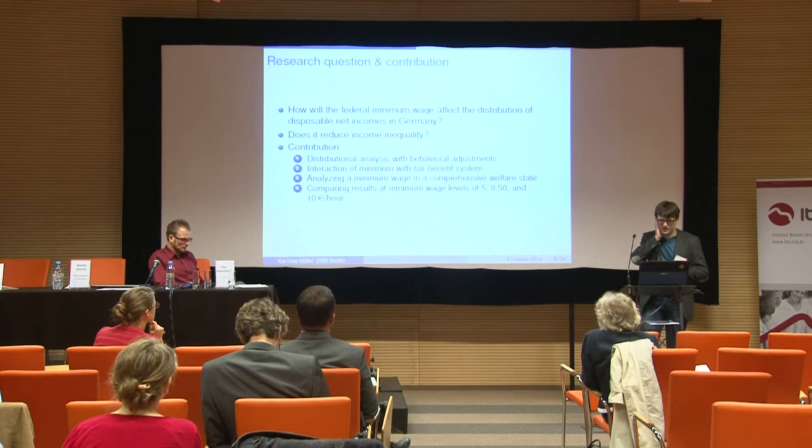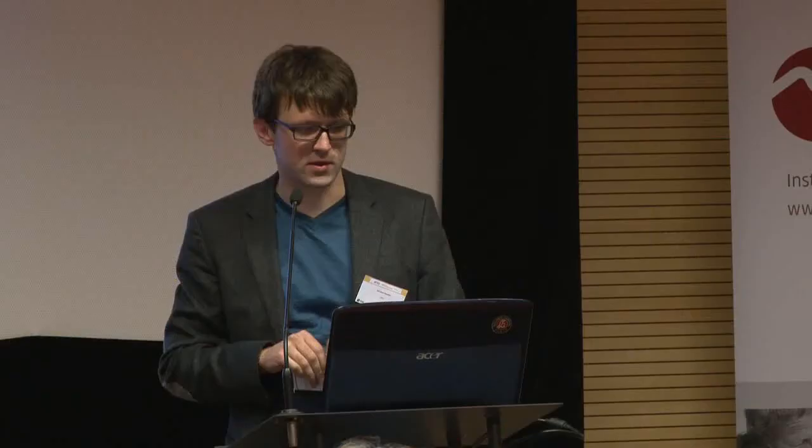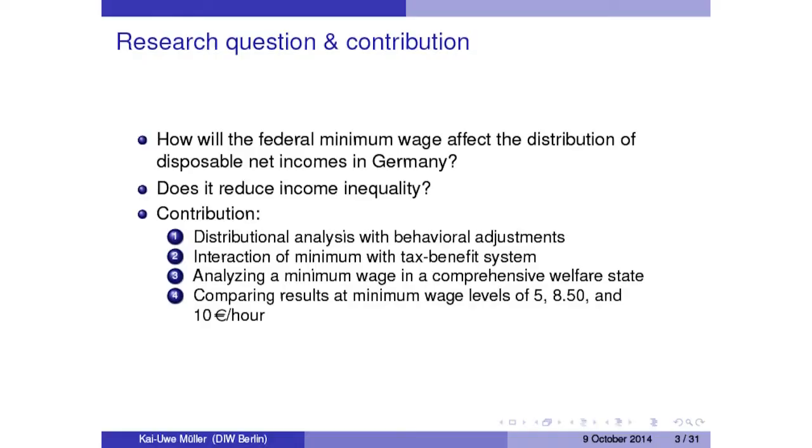What we did in this paper is answer the question: how will this federal minimum wage affect the wage distribution and, more importantly, the distribution of disposable net incomes in Germany? Does it reduce income inequality? We had an earlier paper focusing more on poverty, but this paper addresses general income inequality in Germany.